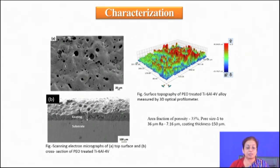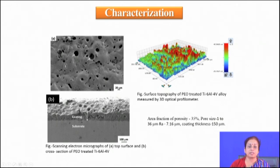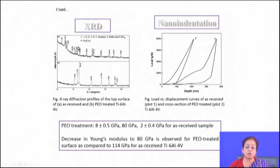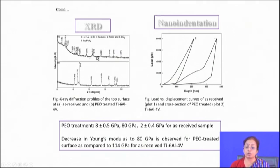Mainly because whenever a channel forms due to the channel formation mechanism there is porosity, but the channel is again closed due to molten metal flow from below the oxide region to the surface. The intermediate portion is full of molten metal, but the outer part has a lot of oxide which is actually closed in nature. Because of this, there is significant roughening of the surface, and that rough surface is beneficial to promote cell growth.